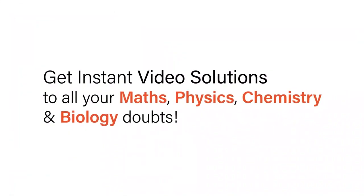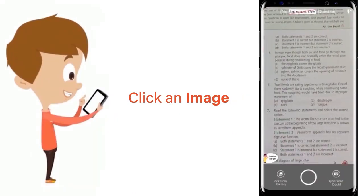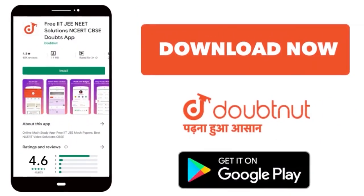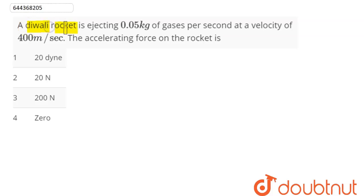With Doubtnet, get instant video solutions to all your maths, physics, chemistry and biology doubts. Just click the image of the question, crop the question and get instant video solution. Download Doubtnet app today. Question is: A Diwali rocket is ejecting 0.05 kg of gases per second at a velocity of 400 meter per second. The accelerating force on the rocket is.